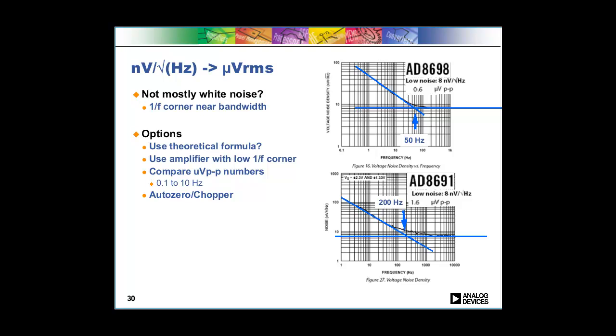Another thing you can do if you're doing a low bandwidth system is that you can use an auto zero or chopper type topology. These topologies have no or very low 1 over F noise, and these are a very good choice if you have very low bandwidth. Now, typically these topologies have